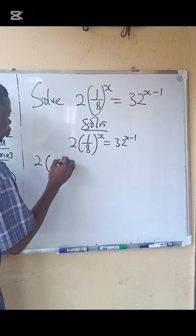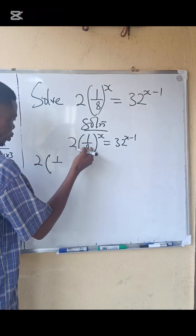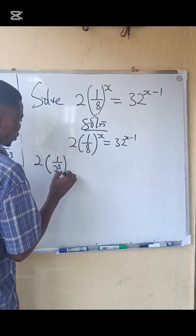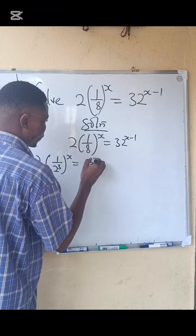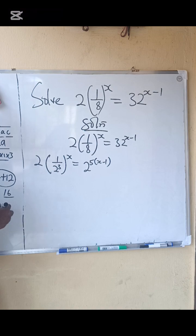We are going to have 2 into this 1 over, we can reduce it to 2 power 3 power x equals to, we do this one, 2 power 5 into x minus 1. So what next do we do?